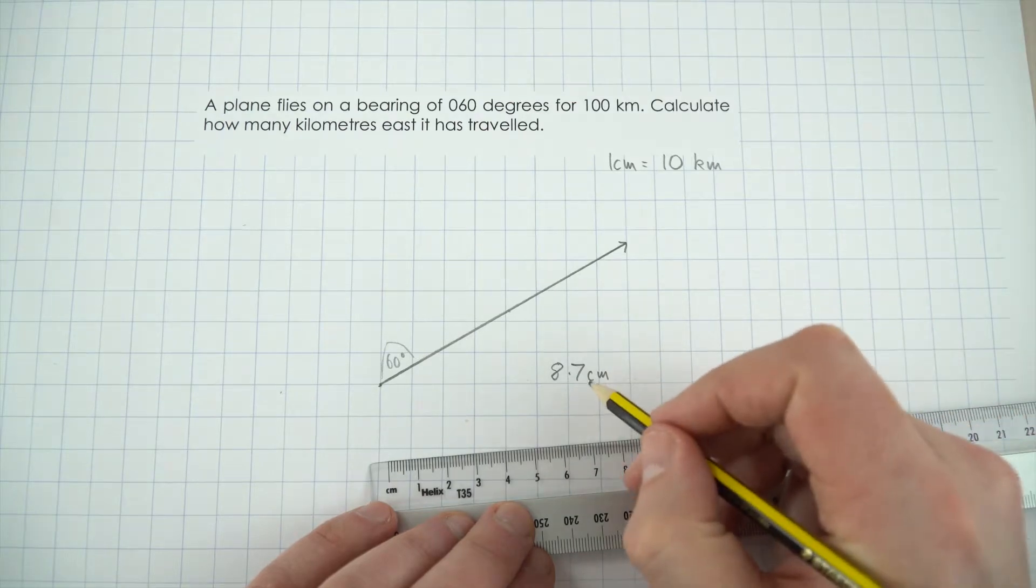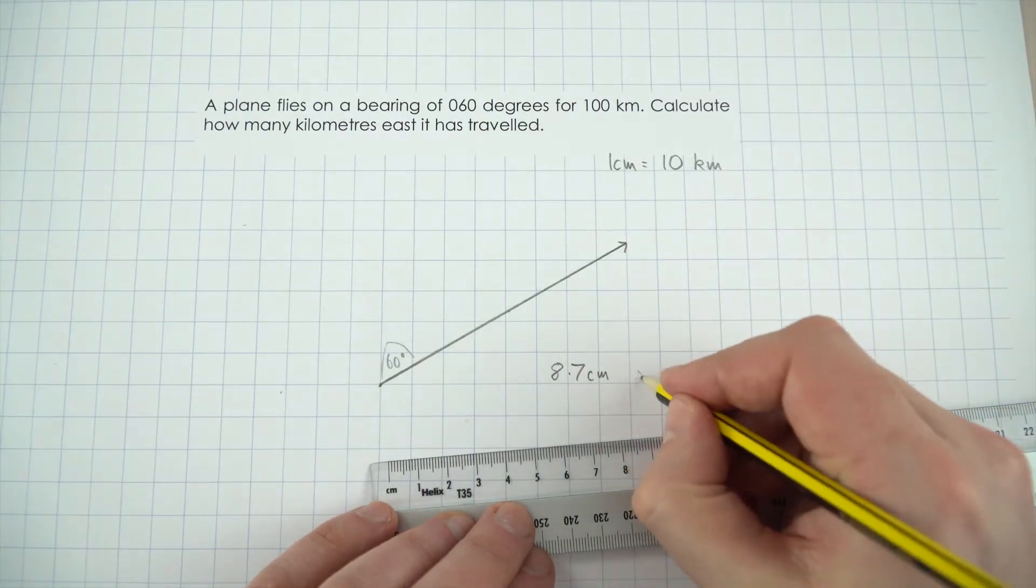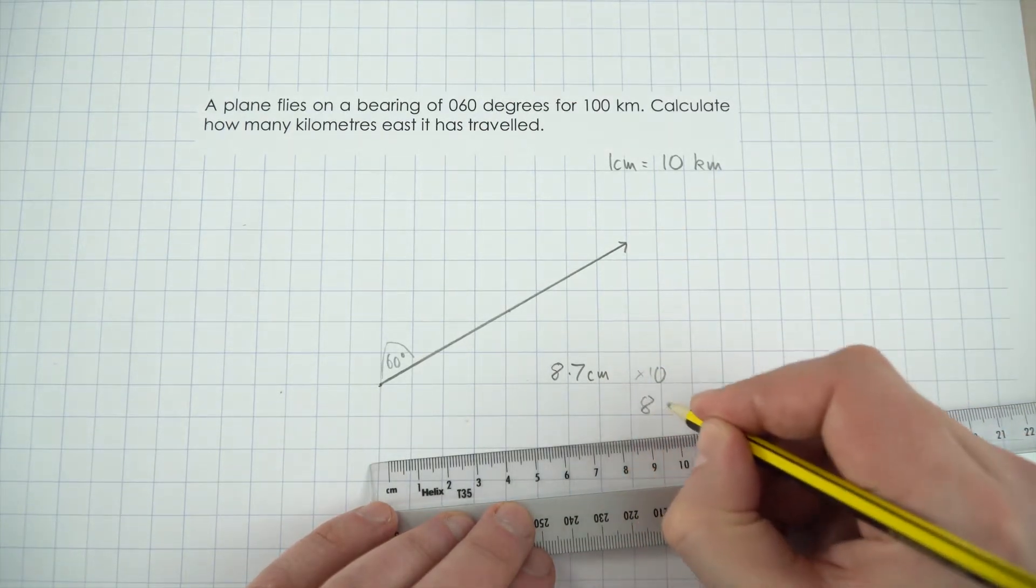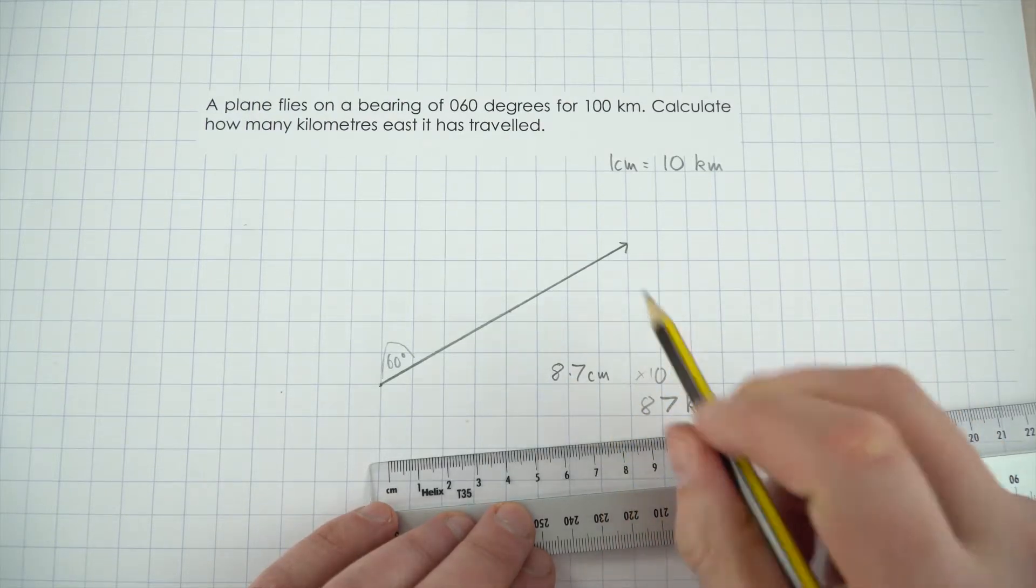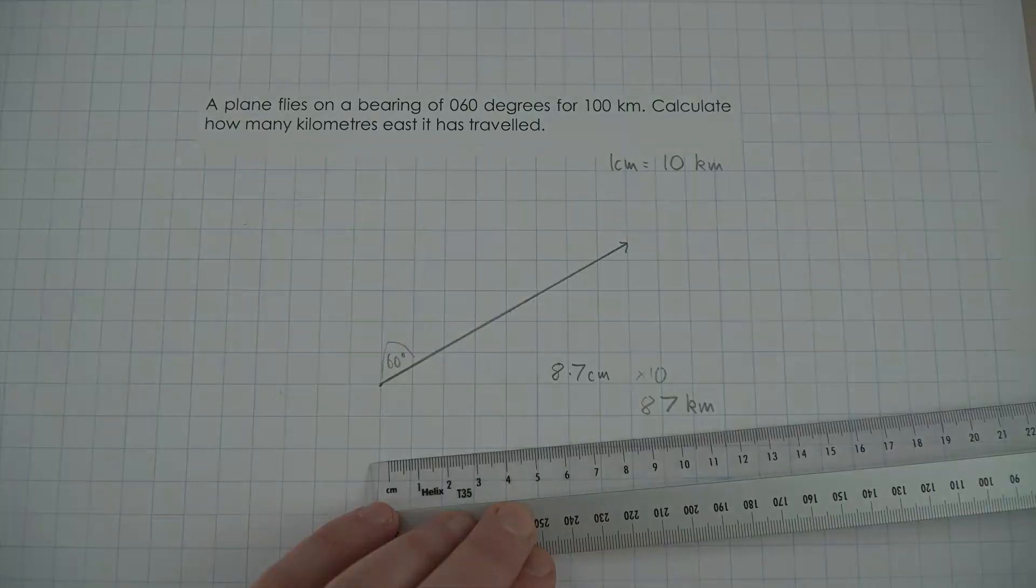And I can then just convert that back into kilometres, so I just multiply it by 10, and this means the plane has travelled 87km east since it started. See you later.